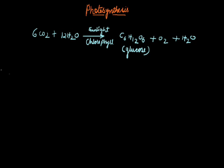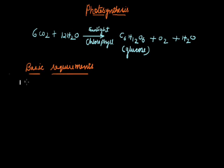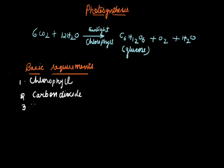Regarding the raw materials or basic requirements of photosynthesis, there are four basic things which are required. The first and foremost raw material is the presence of chlorophyll. The second is carbon dioxide. The third is water, and the fourth is light, that is solar energy.